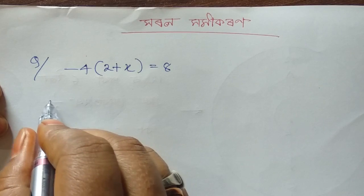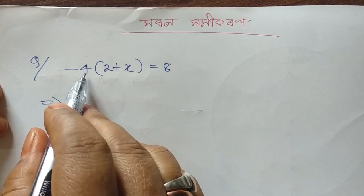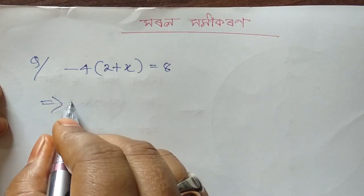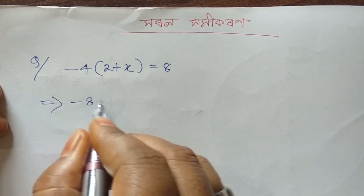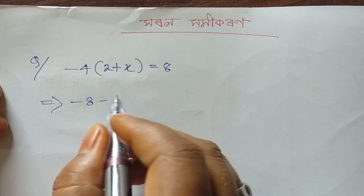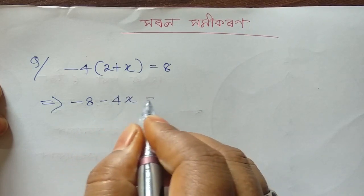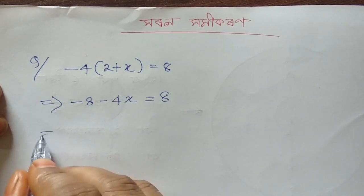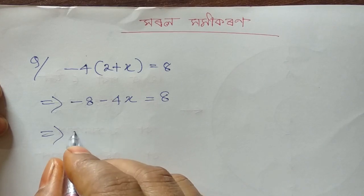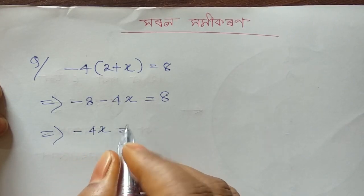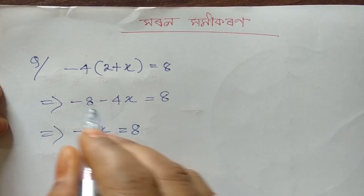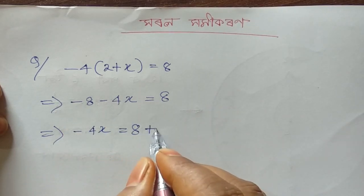The question is minus 4 into 2 is minus 8. The question is minus 4x equals 8. I am going to write minus 4x equals 8.